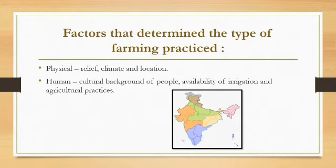Next, sources of irrigation — like the presence of canals, tube wells, and wells for farming or cultivation. Agricultural practices means basically a collection of principles applied to farming production processes in order to get better agricultural products. They are simply practices used in agriculture to facilitate farming, for example soil preparation and so on.